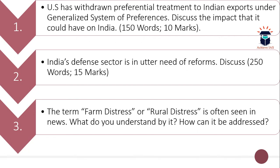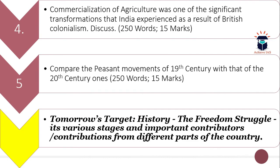These are the current-affairs-based dynamic questions of today. Now come the static questions. The fourth question is: commercialization of agriculture was one of the significant transformations that India experienced as a result of British colonialism — discuss. Here you have to discuss how the commercialization of agriculture happened and what this transformation meant. Word limit is 250 and maximum marks are 15.